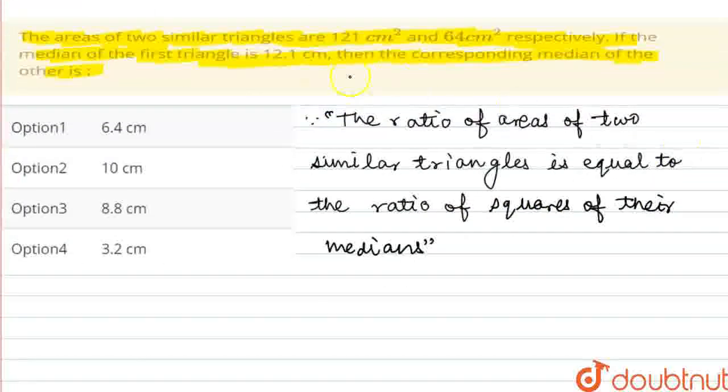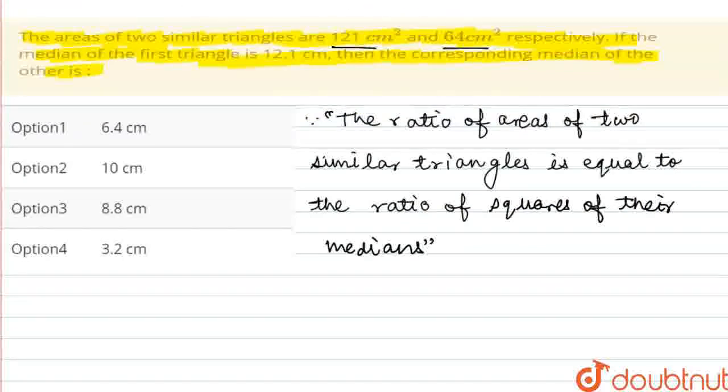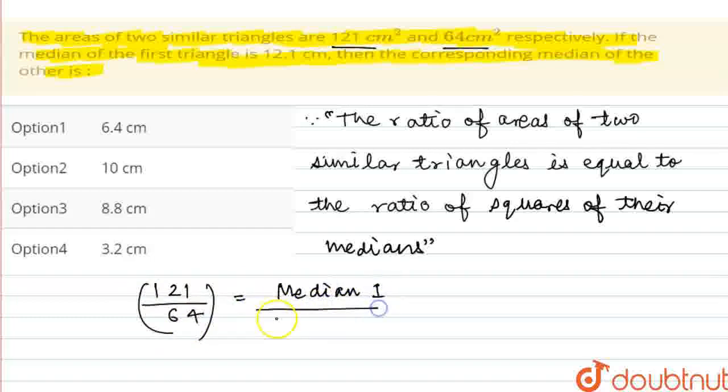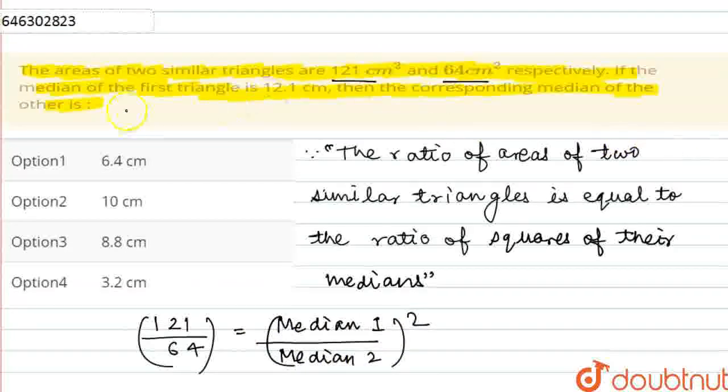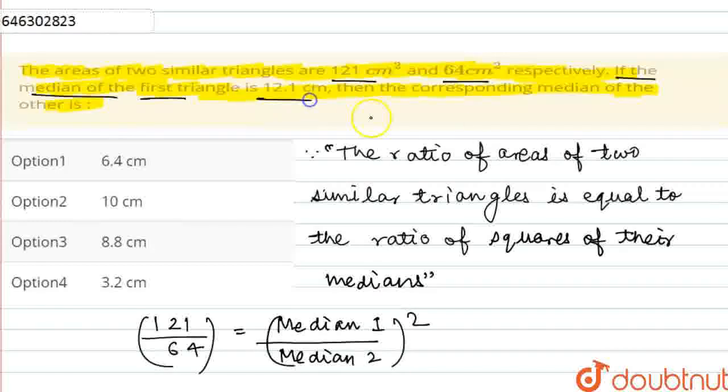If the triangle areas are 121cm² and 64cm², then the ratio 121 divided by 64 is equal to median 1 squared over median 2 squared. The median of the first triangle is 12.1cm.